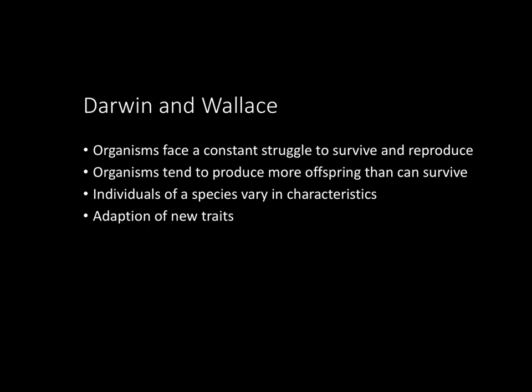When talking about natural selection and evolution, the two main scientists to focus on are Darwin and Wallace. Together they came up with a few key generalizations: first, organisms face a constant struggle to survive and reproduce; second, organisms tend to produce more offspring than can survive; third, individuals of a species vary in characteristics; and fourth, the general adaptation of new traits.